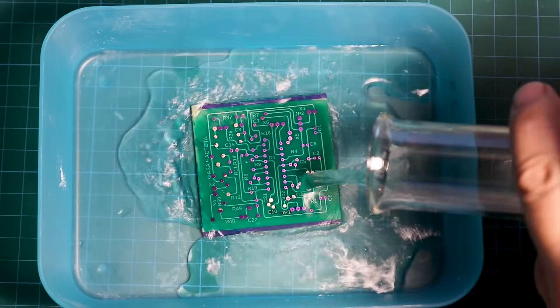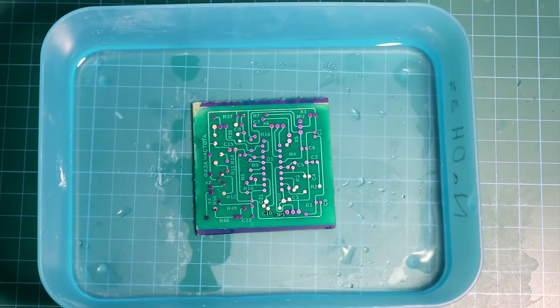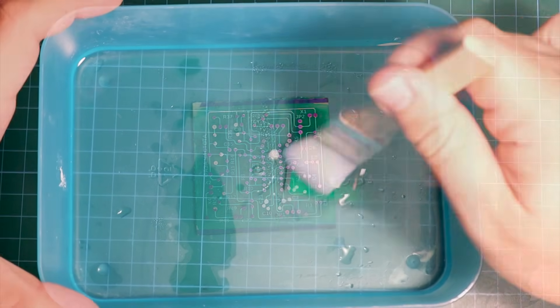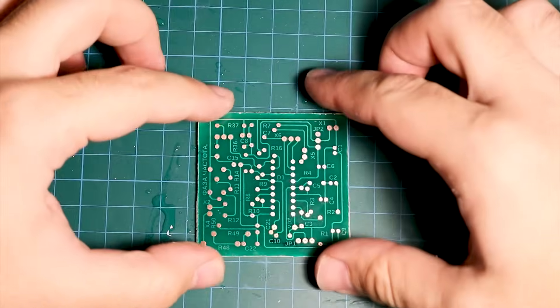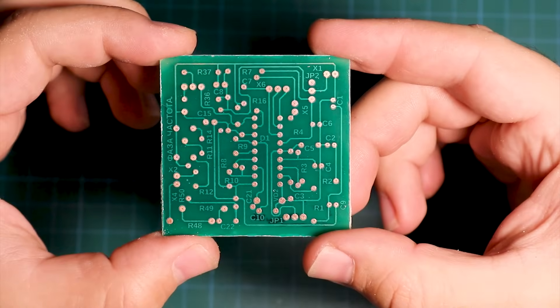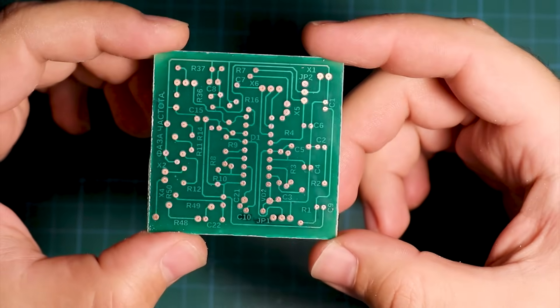After the final exposure, put the board into sodium hydroxide to wash out the photoresist. And take a look. The board is ready. So, we have learned how to make a mask in accessible way. Now, it is time to do it the correct way.